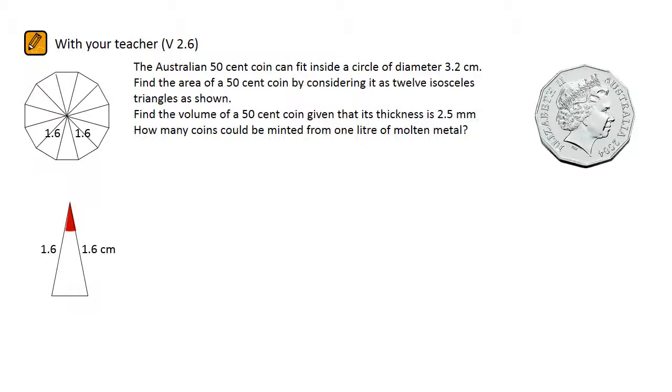Because 12 of these triangles make up a full 360 degrees, if we divide 360 degrees by 12, we will have the angle there at the apex. It is equal to 30 degrees.